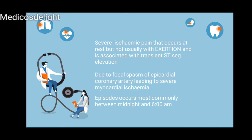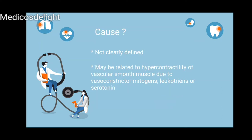It was Dr. Prinzmetal in the year 1959 who first described this particular type of angina. Before 1959, it was the work of Dr. Heberden who had described typical angina occurring with physical exertion and associated with atherosclerotic plaque. Dr. Prinzmetal's findings in a particular set of patients did not match with earlier findings on the subject, so he researched further and came forward with Prinzmetal's angina, and subsequently a lot of research was done on the subject.